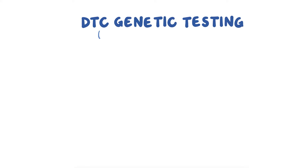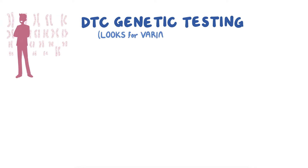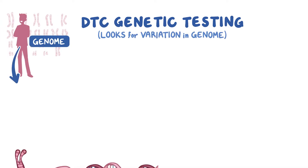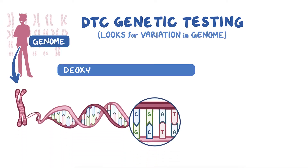Like other genetic tests, direct-to-consumer — abbreviated DTC — genetic testing looks for variation in a person's genome, which consists of deoxyribonucleic acid, or DNA, and is organized into genes.